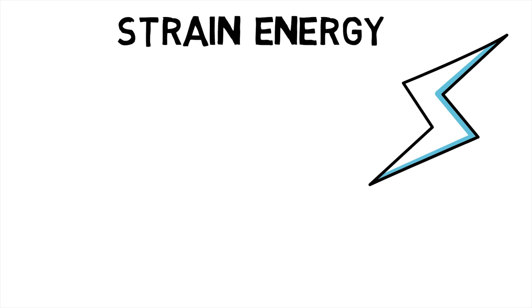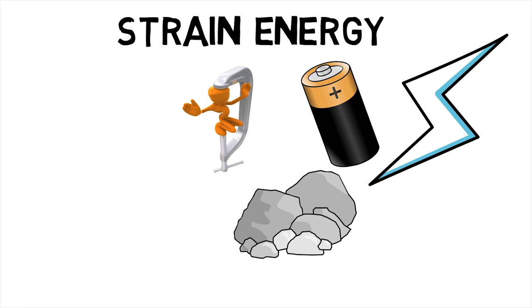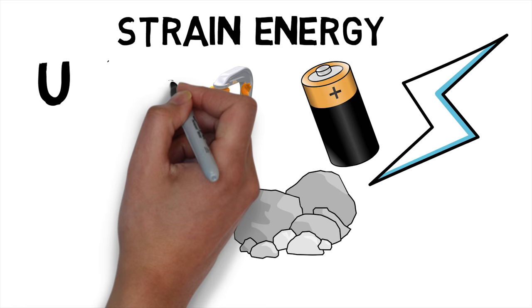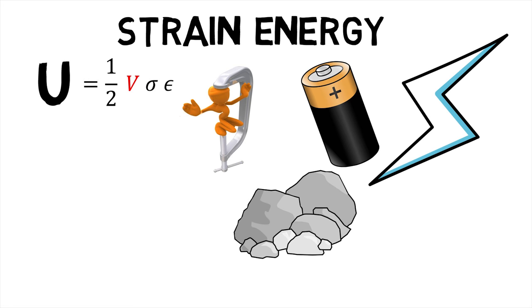Now Strain Energy is the energy stored by a system undergoing deformation. For linearly elastic materials, Strain Energy U is given as half the product of Volume V, Stress Sigma and Strain Epsilon.